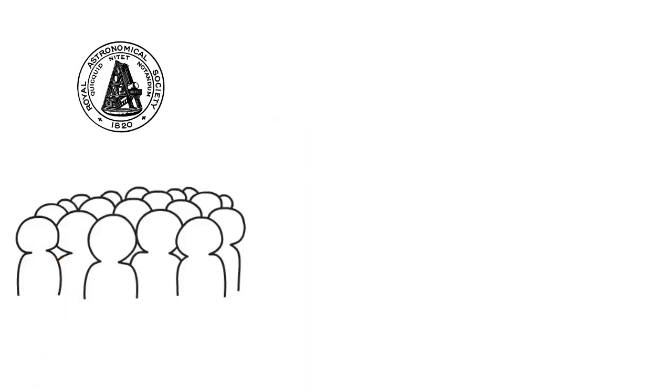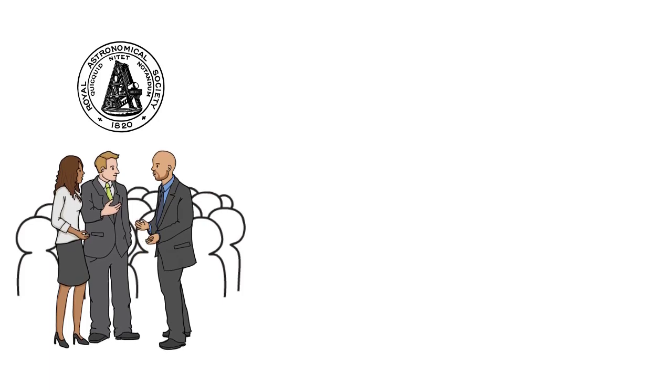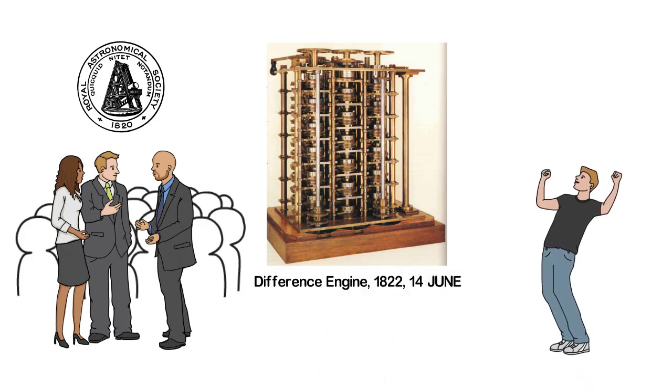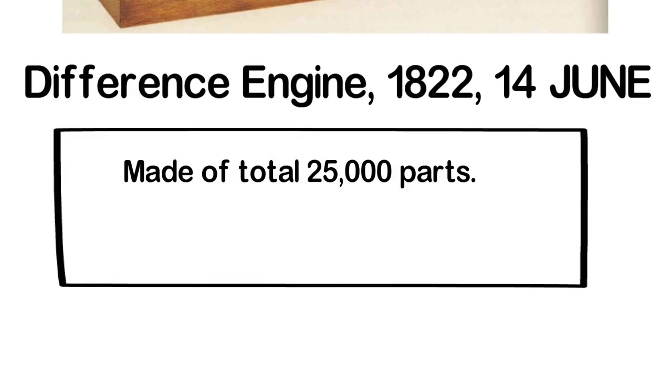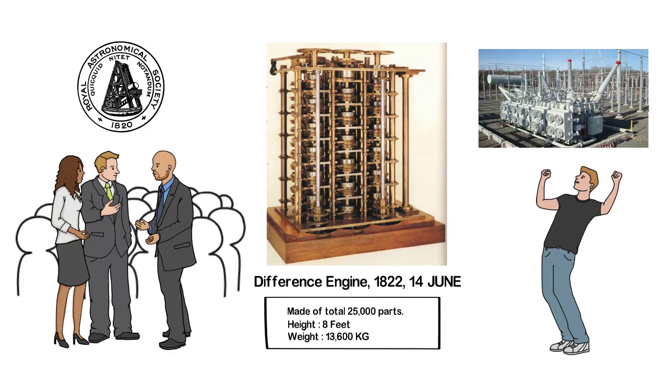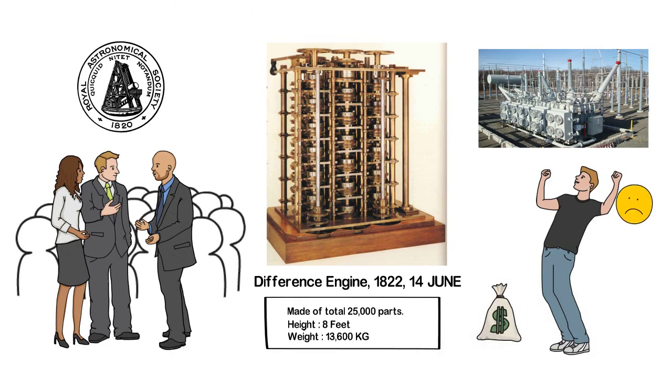At Cambridge, he continued his education at Trinity College. He played a key role in establishing the Royal Astronomical Society. In this context, the society's framework was established for the first time. He began working on a new engine design to complete complex calculations, which he named the Difference Engine.